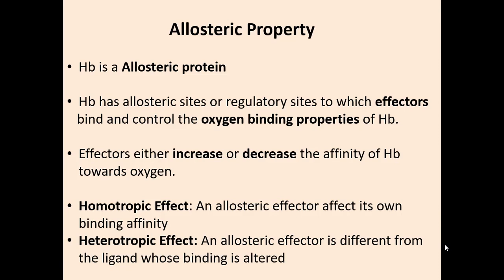Hemoglobin is an allosteric protein. It has allosteric sites, or regulatory sites, to which effectors bind and control the oxygen-binding properties of hemoglobin. Effectors either increase or decrease the affinity of hemoglobin towards oxygen. Homotropic effect: an allosteric effector affects its own binding affinity. The example is oxygen. Oxygen is an allosteric effector that affects its own binding affinity; the binding of the first oxygen molecule enhances the affinity of the remaining hemoglobin subunits towards oxygen.